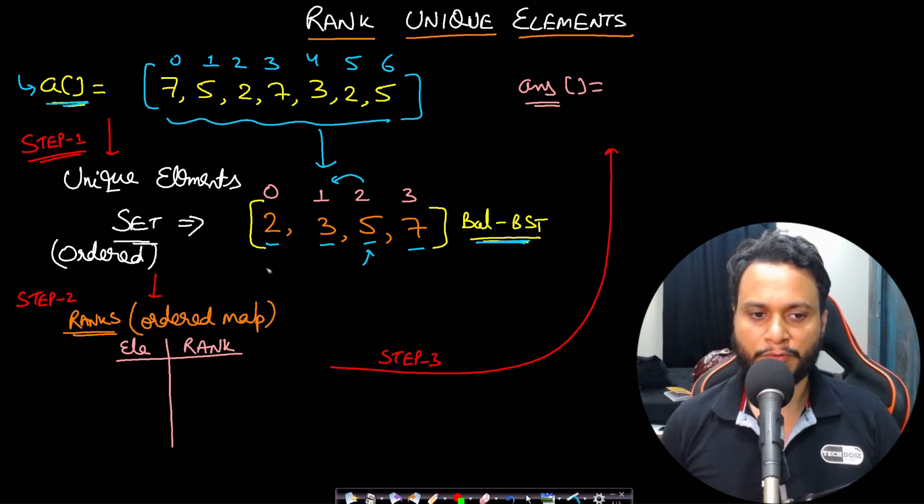So we will take all the unique items and push them into an ordered map. So if you push them into an ordered map, the first item going is two will get a rank one. Then the second item going three will get a rank two. The third item going five will get a rank three.